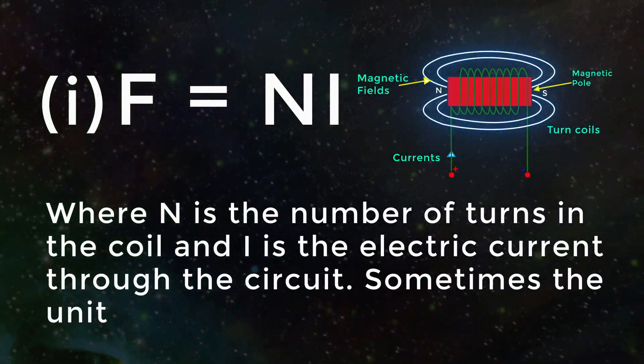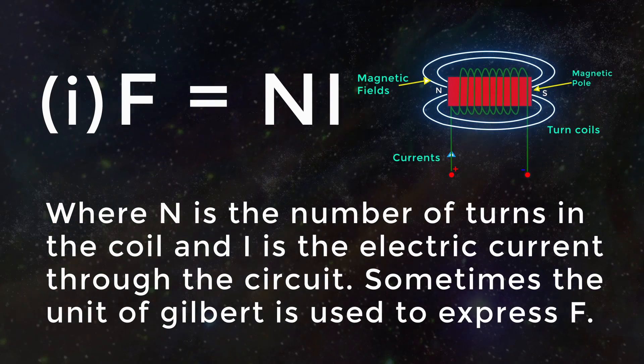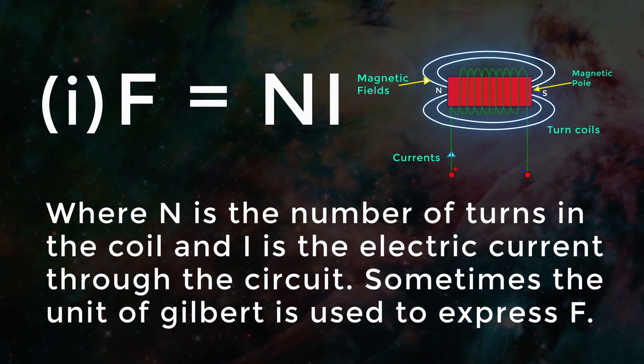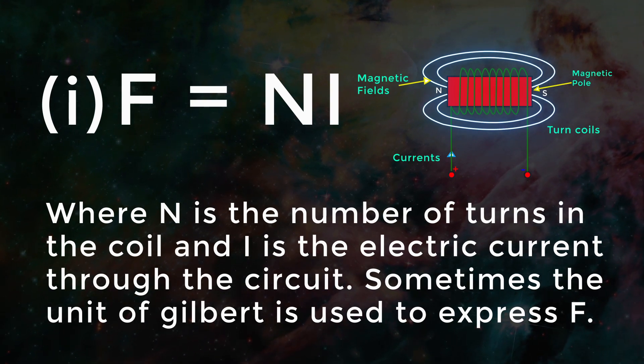F equals N I, where N is the number of turns in the coil and I is the electric current through the circuit. Sometimes the unit of gilbert is used to express this as shown here.